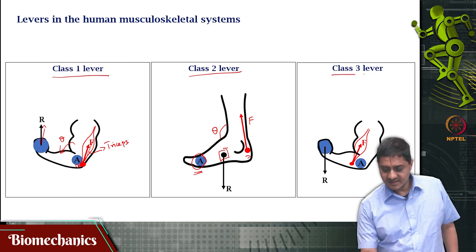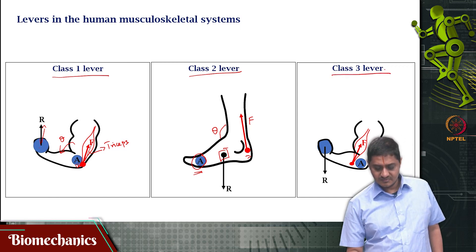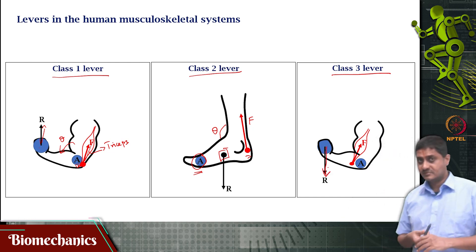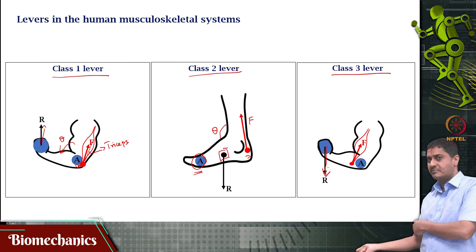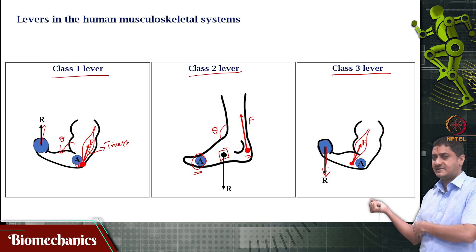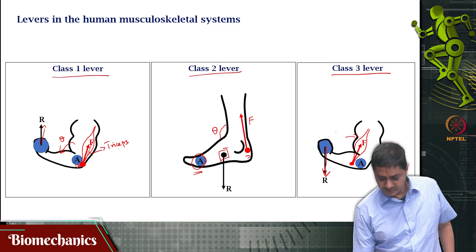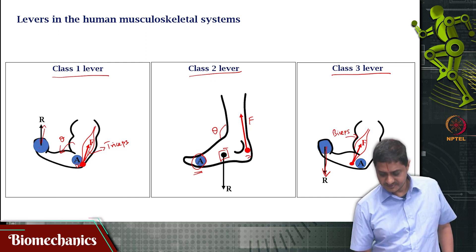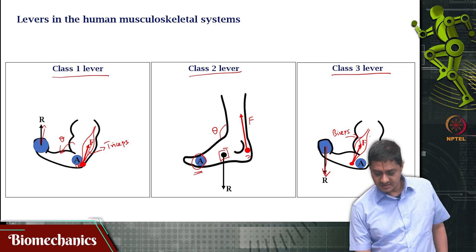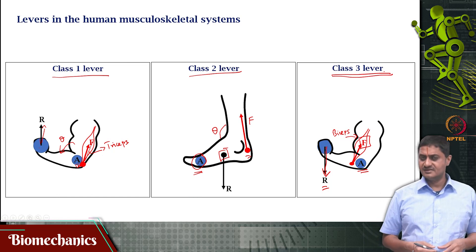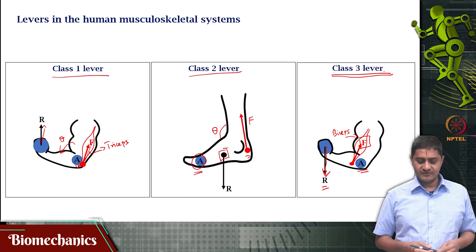Then we have the class 3 lever. In this case, the resistance is pulling the arm down — that is the weight pulling my arm down — but I am trying to overcome that and keep it up. The muscle doing that is the biceps muscle. Here, the force is between the axis and the resistance. This is an example of a class 3 lever. There are examples of all three types in the human body.